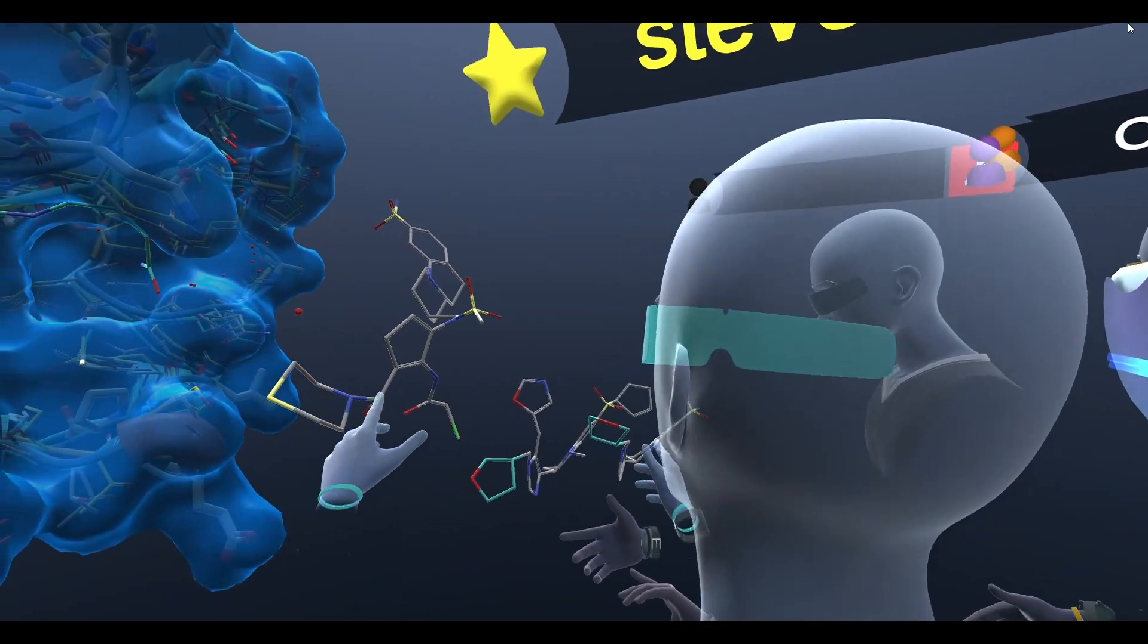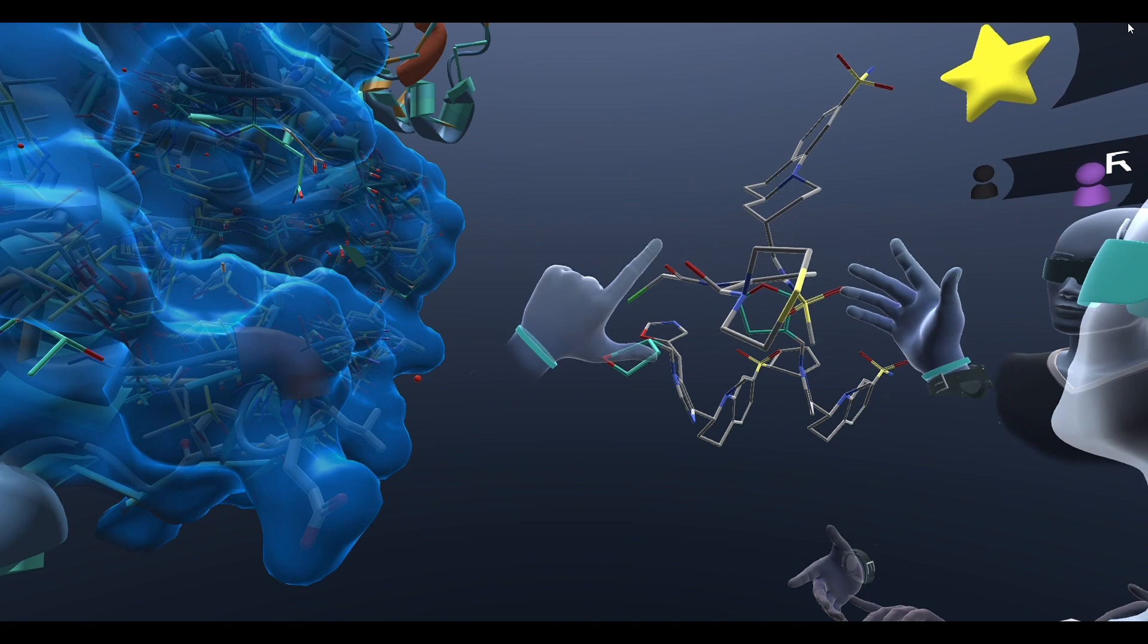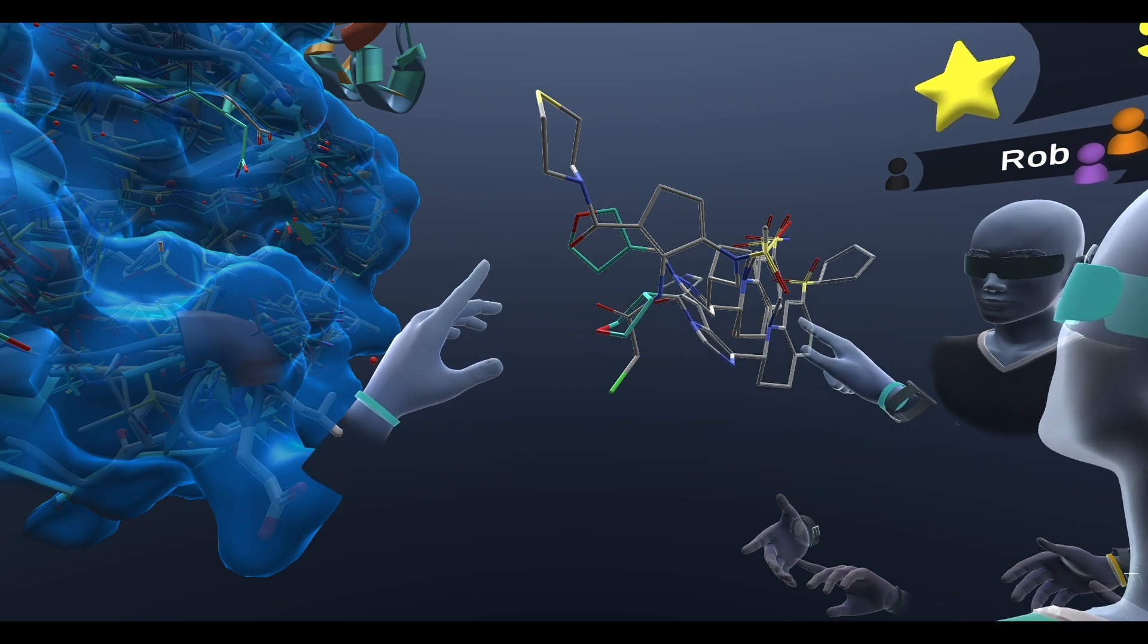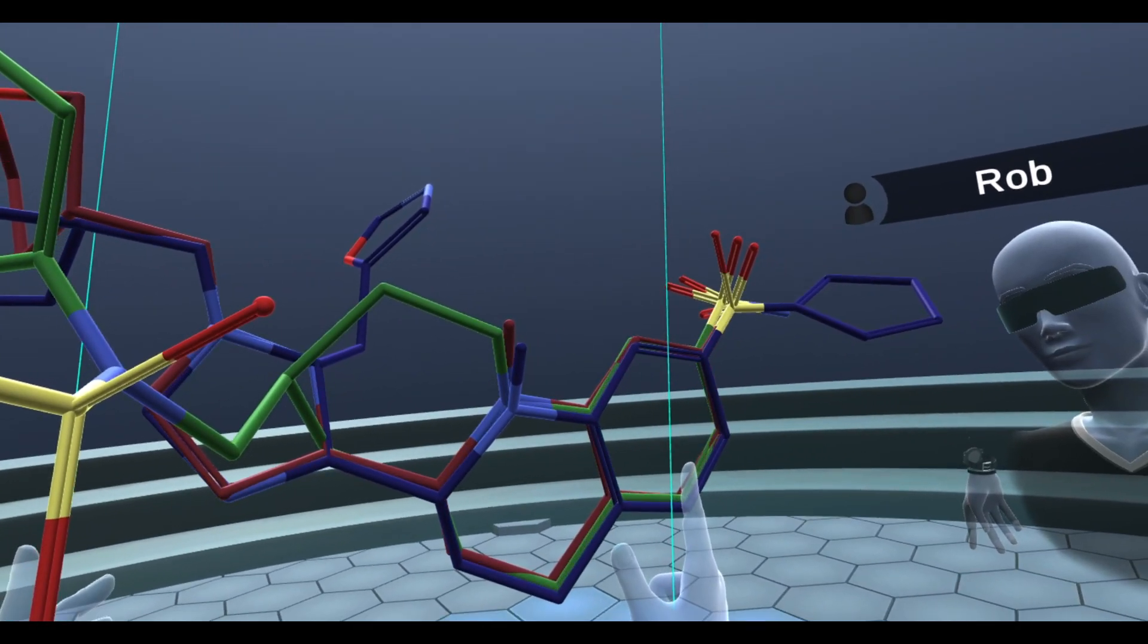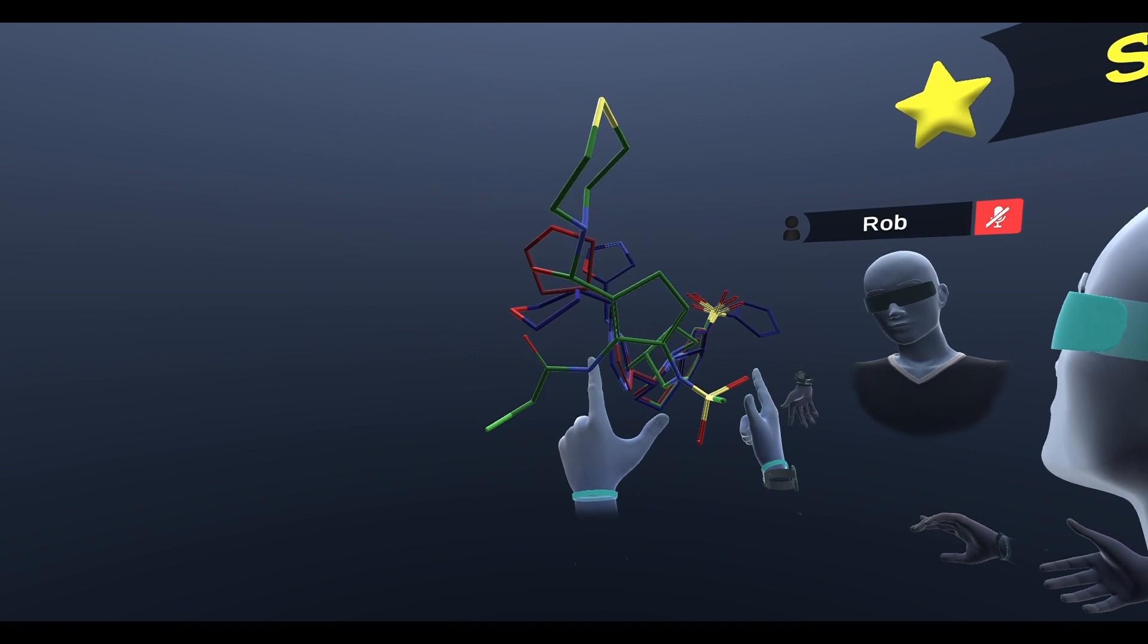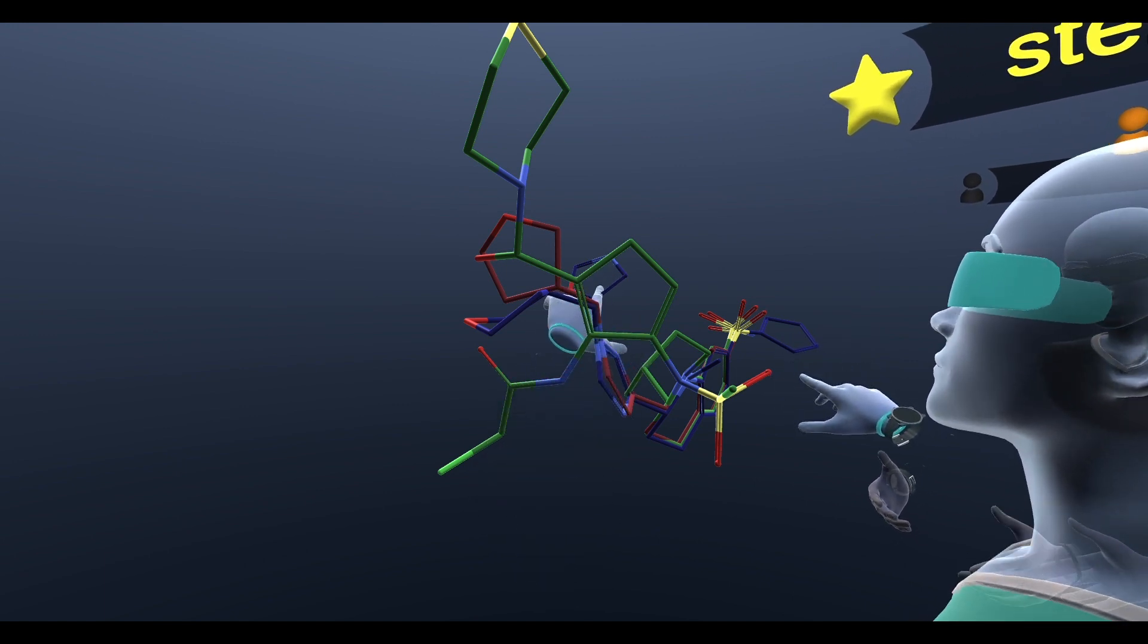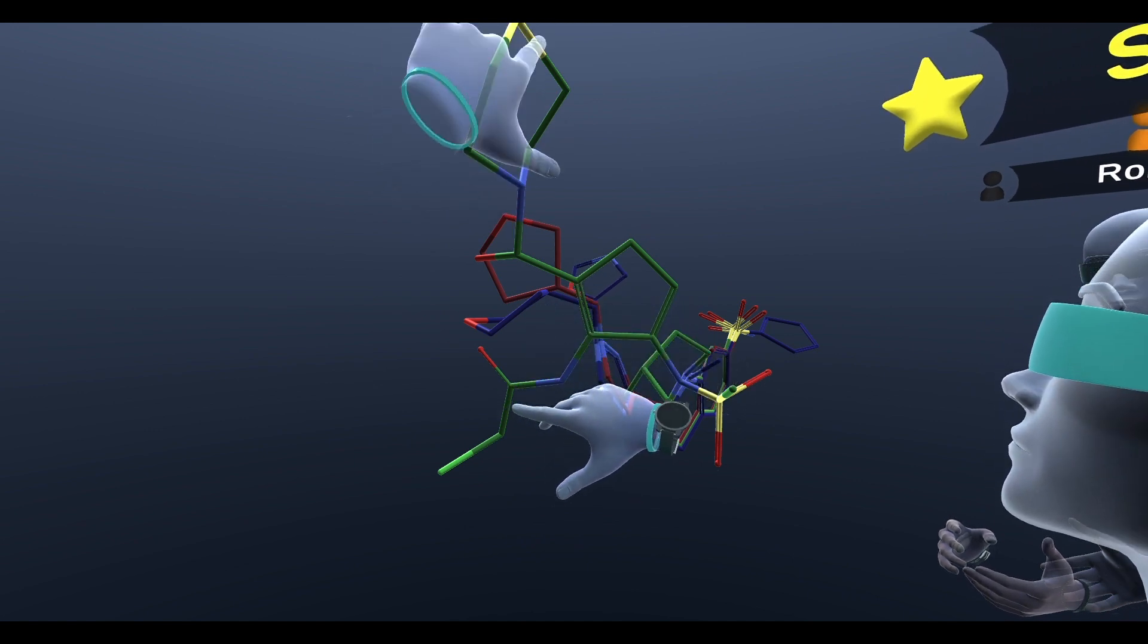And so now we should see all of our chemicals that we designed here. So we got my molecule, and then we have Mike's molecule, and then we have Rob's molecule. Cool. And so yeah, we could see that there was a lot of overlap—very similar structures—but we each made a few different variations. So Rob was the only one that put this five-member ring over on that side and the only one that really built out there.